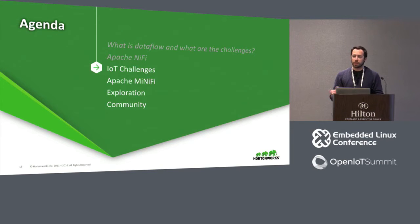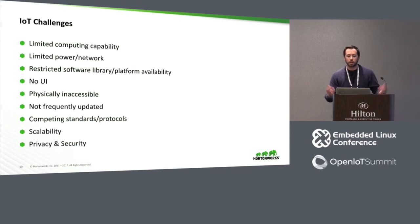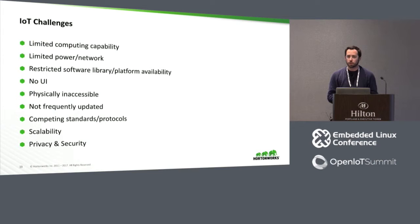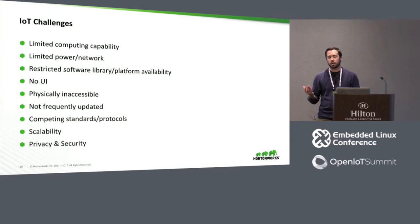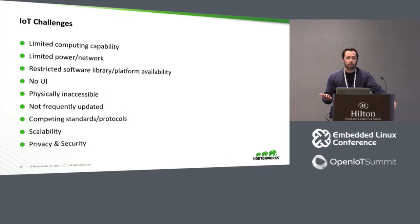Now we're going to talk about IoT challenges, because that's why most people are here today. IoT is not just throwing a clustered computer system out into the wild. You have limited computational capabilities, limited network and power. These are small devices sometimes that are not physically accessible, or the scale renders it infeasible — you can't go around with a USB stick to 1.4 million cars. You might have to control entire classes of agents or endpoints. They're not frequently updated, especially if you're using a lowest-bidder manufacturer. We talked about competing standards and protocols, scalability, and then privacy and security. How many people want their email credentials leaked because their connected refrigerator didn't get a firmware update?